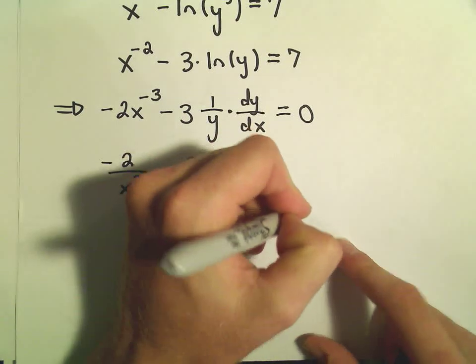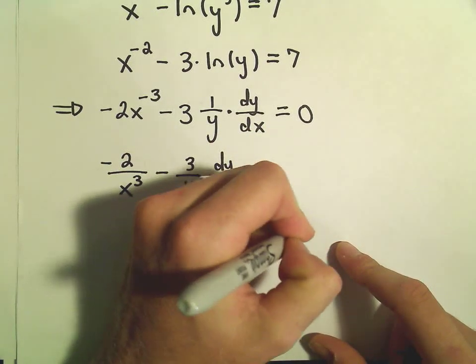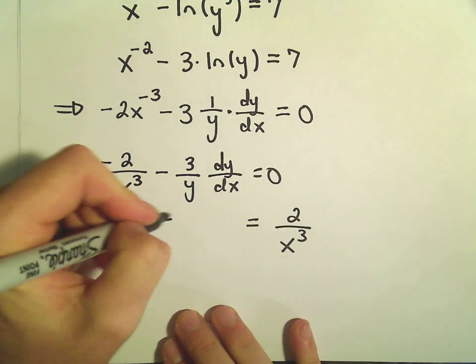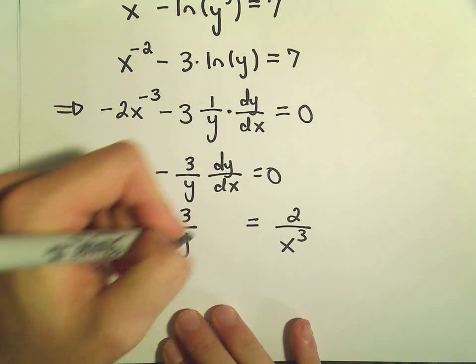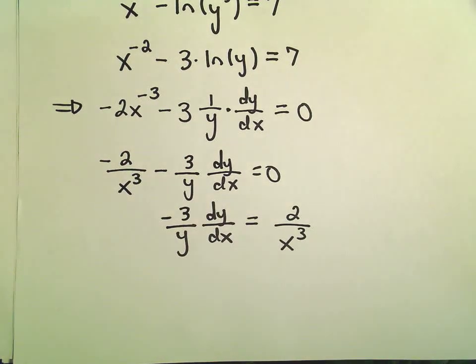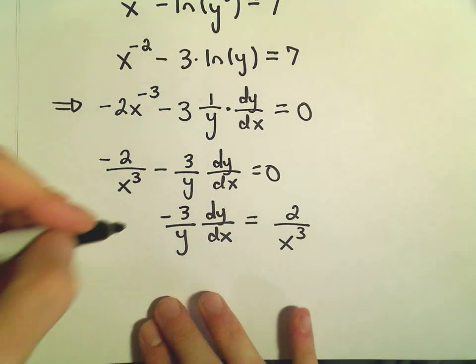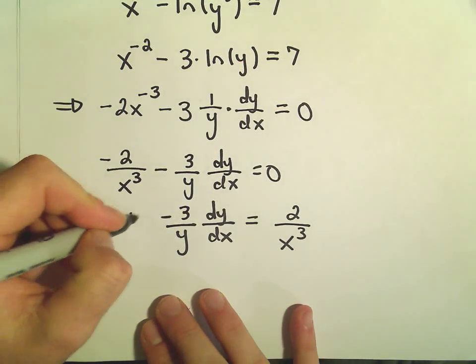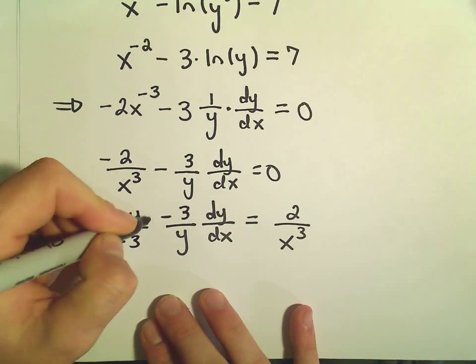So, that will give us 2 over x to the third on the right side. And then we're just left with negative 3 over y dy over dx. And now all we have to do to get rid of the negative 3 over y, we can just multiply both sides by y over negative 3.